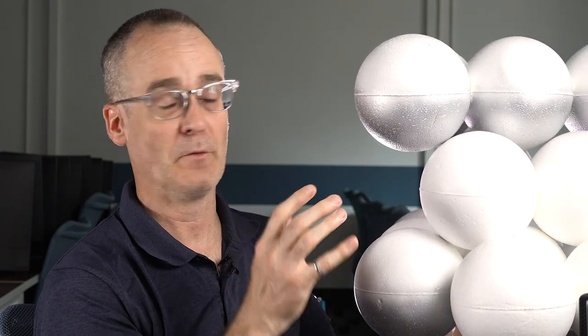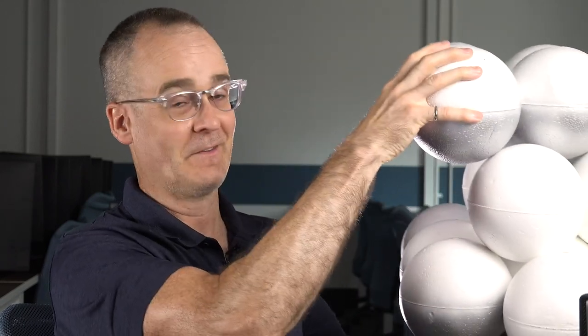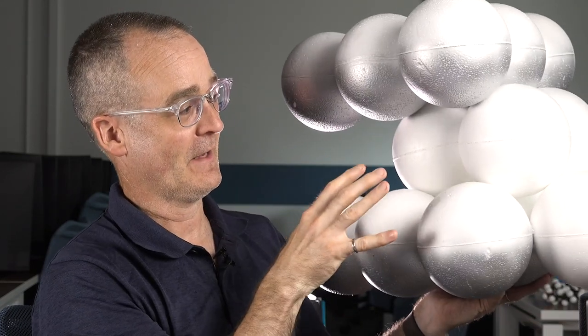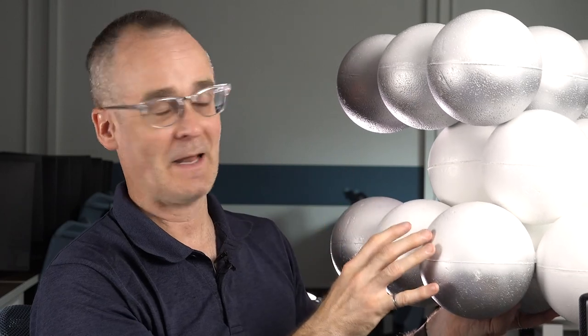Compared to this distance here between close-packed atoms we call that A, so what's the C over A ratio? You might know the answer is 1.633, it's actually pretty easy to prove. I'm going to show you that.